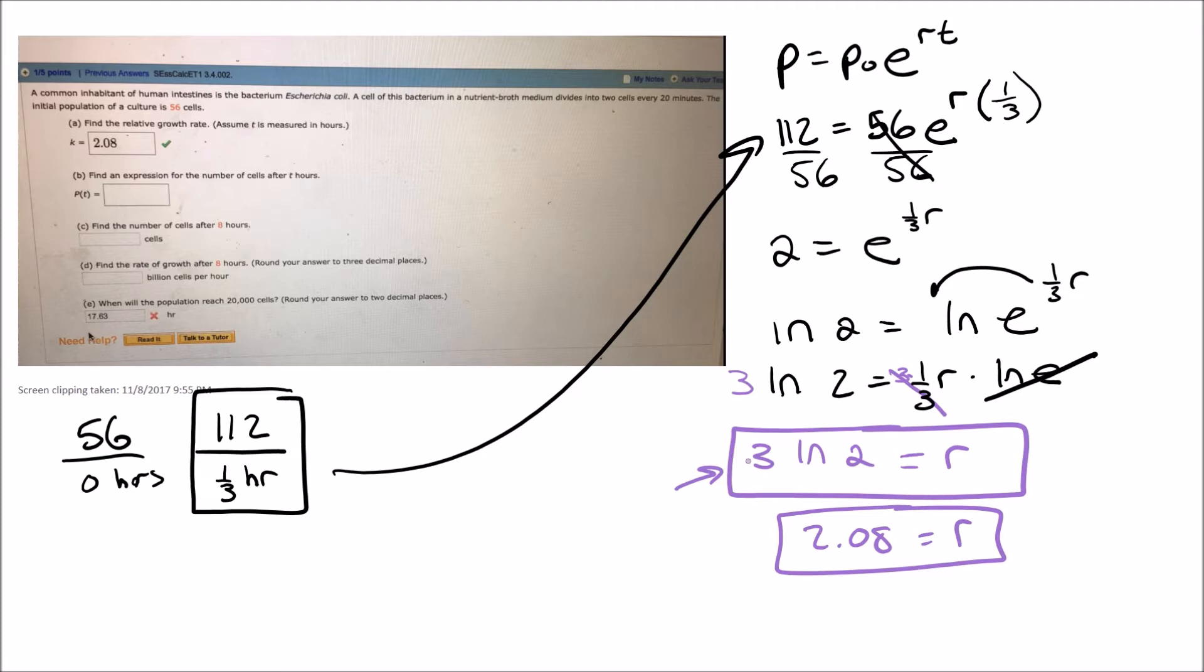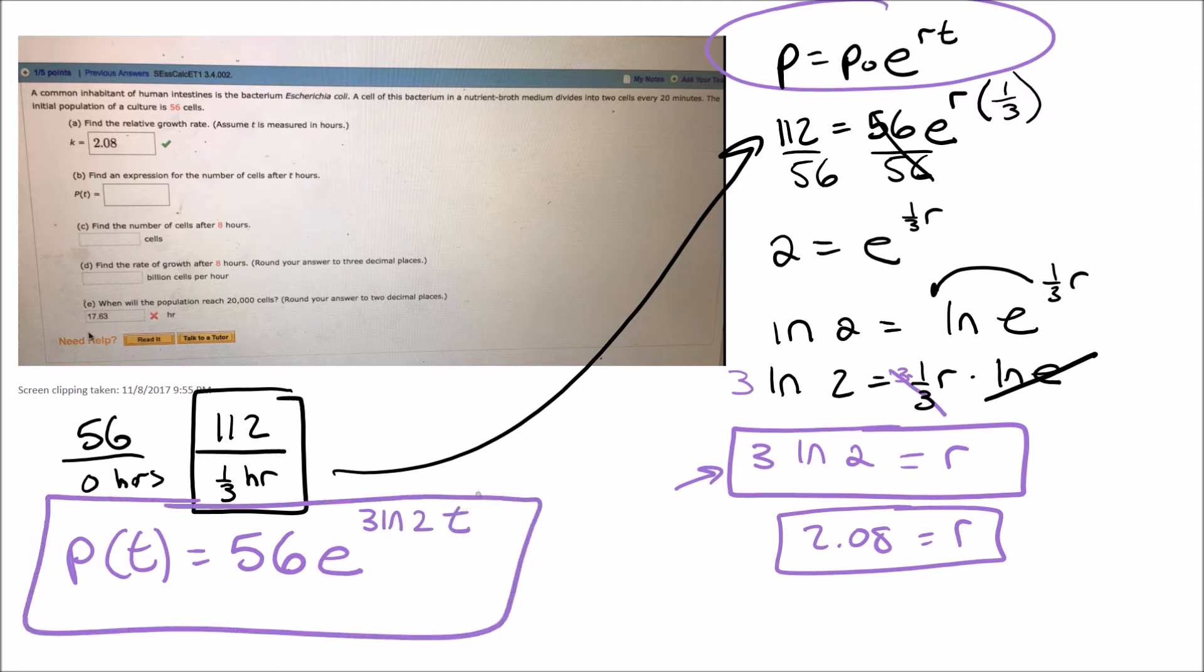So part b says find an expression for the number of cells after t hours. Well, this is very easy. All you need to do then is put that value back into your equation here. So P of t would be our initial population, which is 56, times e to the r, which we just found out, which is 3 ln of 2 times t.